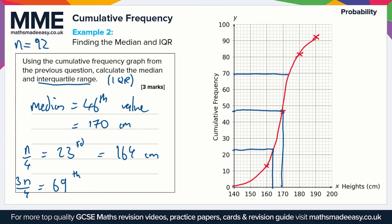And then for the 69th value, we go up to a value of 69, a straight line across, and then a straight line down. Your lines should be a bit straighter than those ones, but that gives us a value of about 174 centimeters.